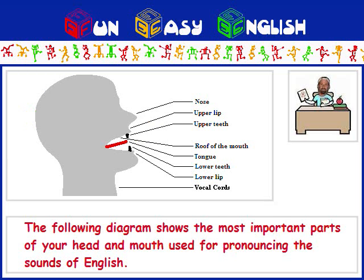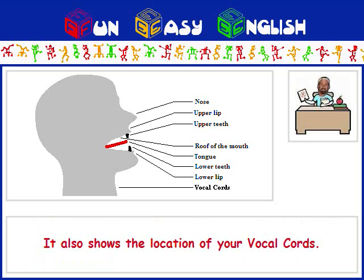The following diagram shows the most important parts of your head and mouth used for pronouncing the sounds of English. It also shows the location of your vocal cords.